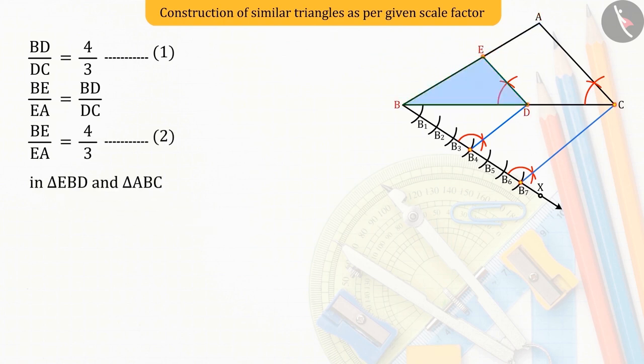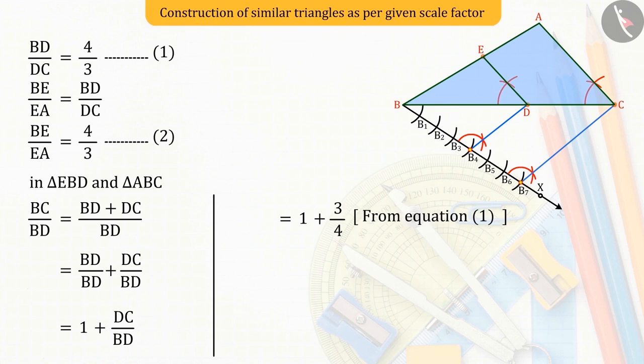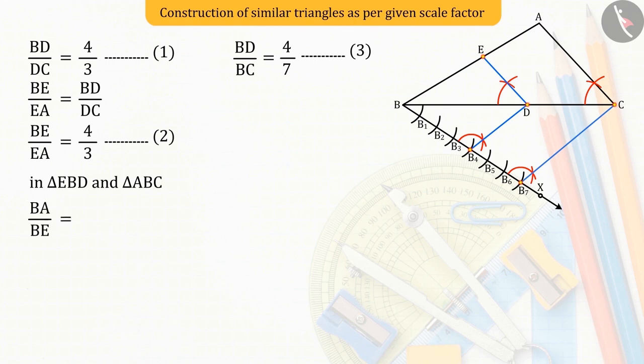In triangle EBD and ABC, we get BD upon BC equals 4 upon 7. Similarly, we can find the value of BE upon BA.